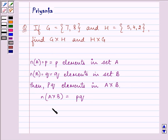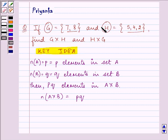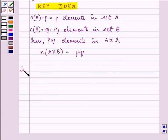Now, this key idea will help us in proceeding with our solution because if you observe the question carefully, there are few elements in set G and few elements in set H, and we need to find G cross H and H cross G.